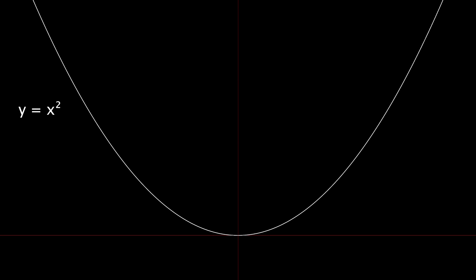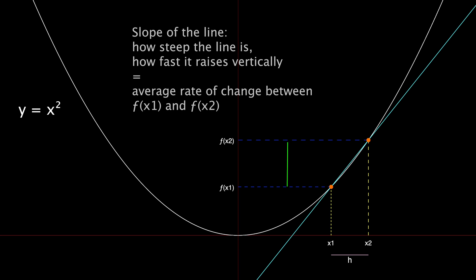Let's now visualize the concept graphically. Let's for example take the function y equal x squared, which gives us this parabola. What is the change in the output of the function between the point x1 and x2? If we take a line that passes between these two points, with distance h between each other, the slope of that line, which is how steep the line is, will be the average rate of change between these two values of the function.